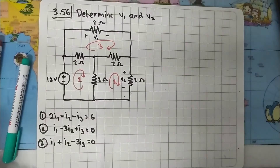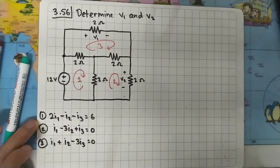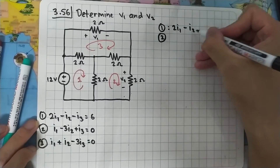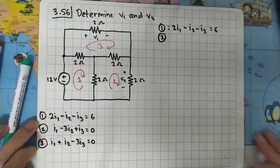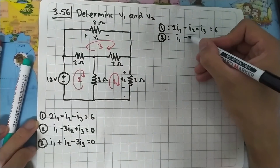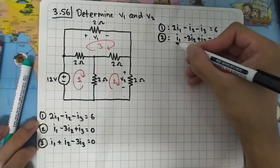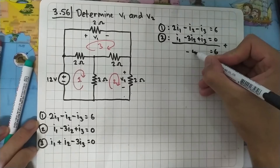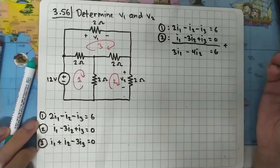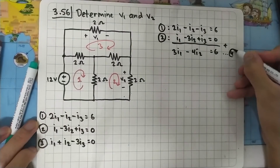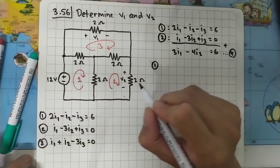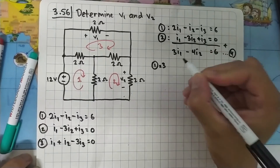Now let's solve by elimination. First, I want to eliminate I3. Using Equation 1 (2I1 - I2 - I3 = 6) and Equation 2 (I1 - 3I2 + I3 = 0), adding these two equations cancels I3, giving: 3I1 - 4I2 = 6. This is Equation 4.